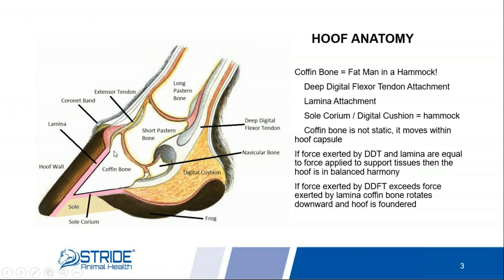As long as all of these forces are in equilibrium, we have balance, we have harmony, and the foot is happy. The coffin bone is not like concrete — it's not fixed in place. It actually moves within that hoof capsule. In a case of laminitis, these laminae begin to break down, breaking the linkage between the lamina and the coffin bone. The force applied by the deep digital flexor tendon then exceeds the force of the lamina, pulling the coffin bone downward — and you now have a founded horse.